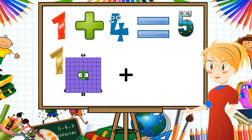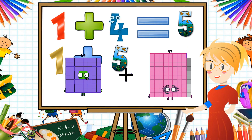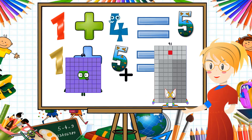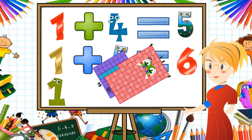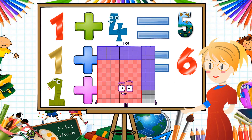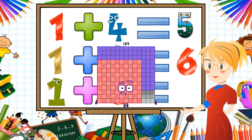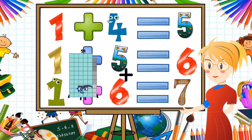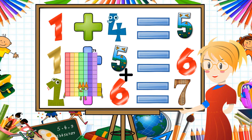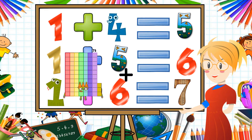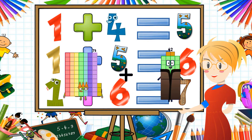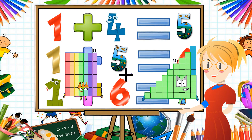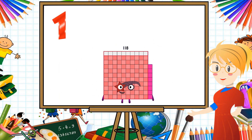64 plus 105 equals 169. 73 plus 45 equals 118.